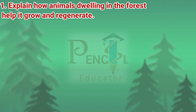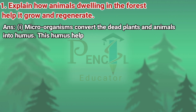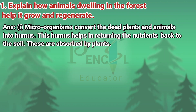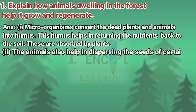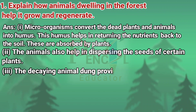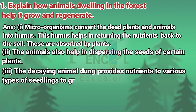First question: Explain how animals dwelling in the forest help it grow and regenerate. Answer: Microorganisms convert the dead plants and animals into humus. This humus helps in returning the nutrients back to the soil. These are absorbed by plants. The animals also help in dispersing the seeds of certain plants. The decaying animal dung provides nutrients to various types of seedlings to grow.